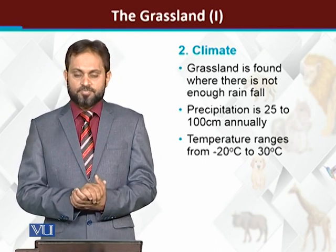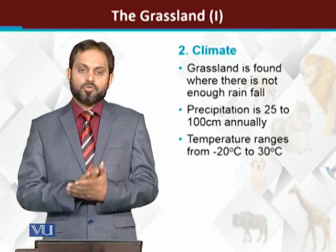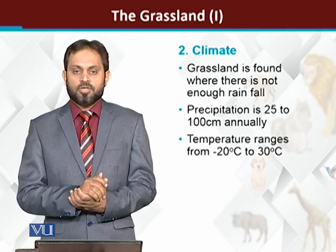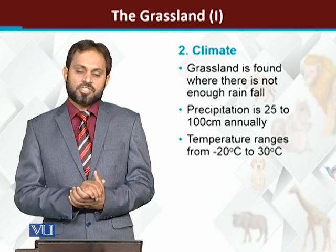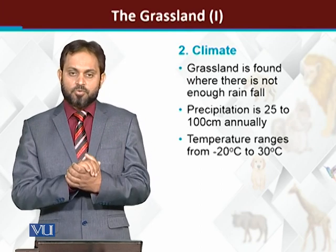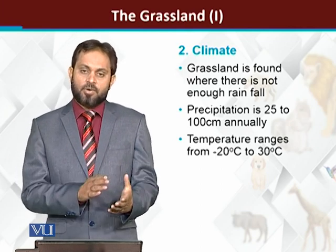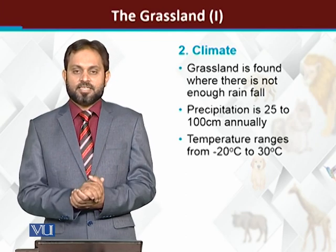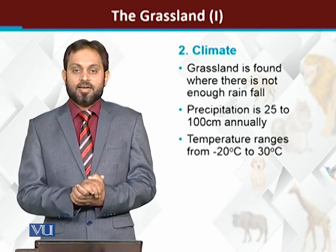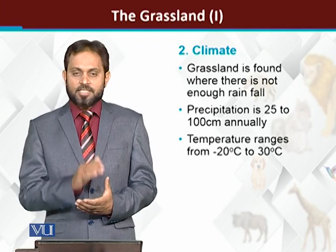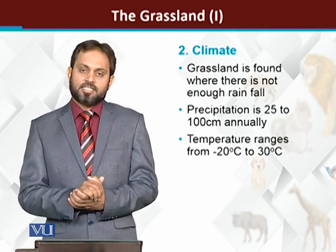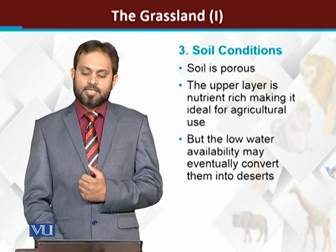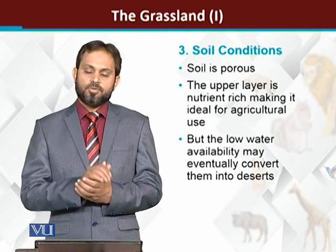Temperature conditions vary — کچھ grasslands بہت cold environment میں موجود ہیں، جبکہ کچھ میں overall grasslands they are having moderate climatic conditions. Temperature fluctuates from minus 20 to 30 degree centigrade — یعنی minus 20 to 30 degree centigrade کے درمیان temperature conditions vary کرتی ہیں۔